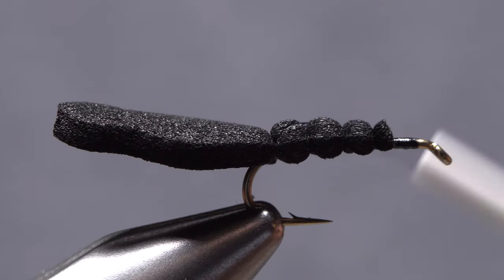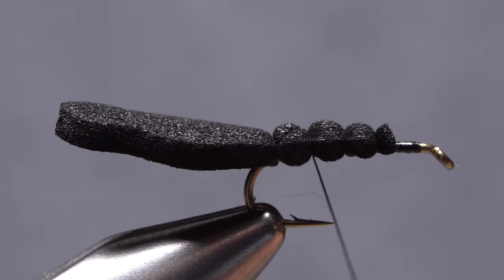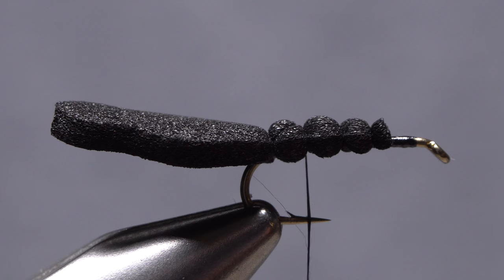Cross over top of the rear segment and leave your thread hanging just in front of it. Having these segments relatively uncompressed helps with flotation.